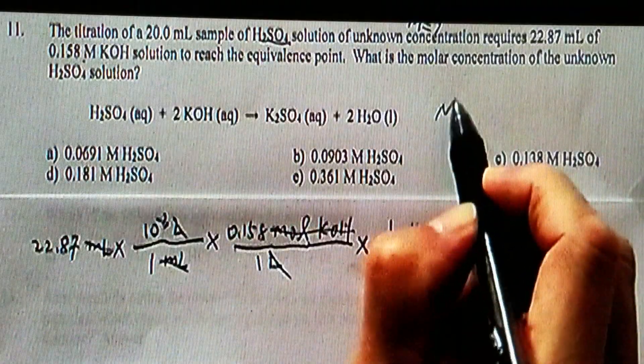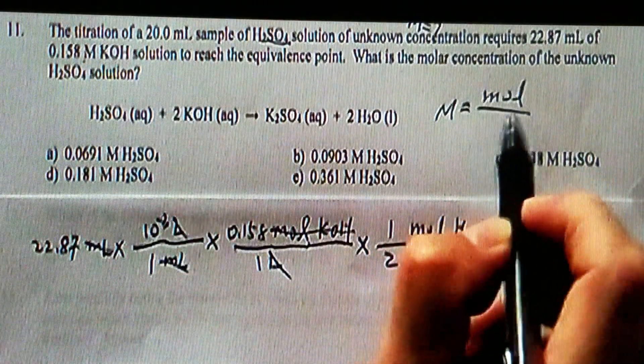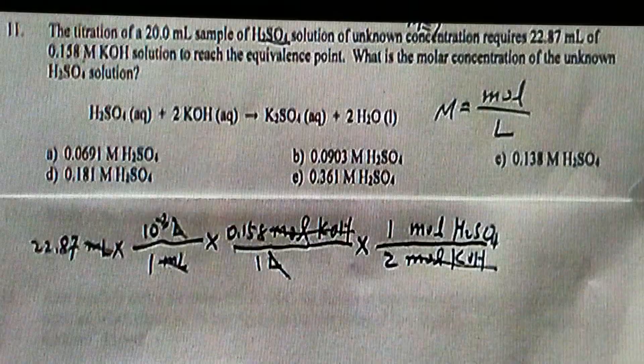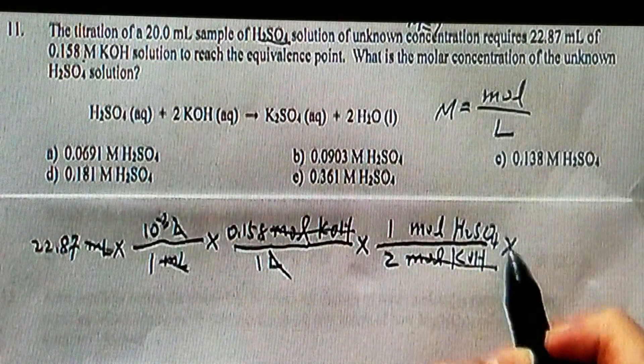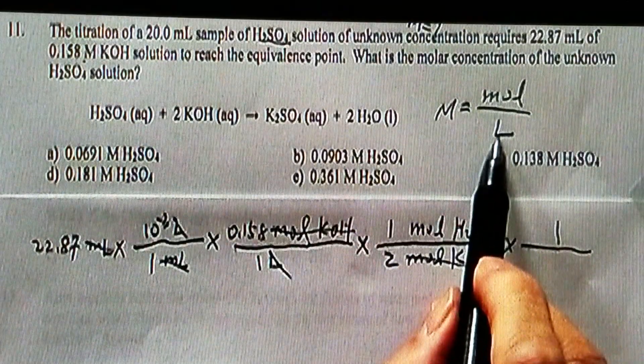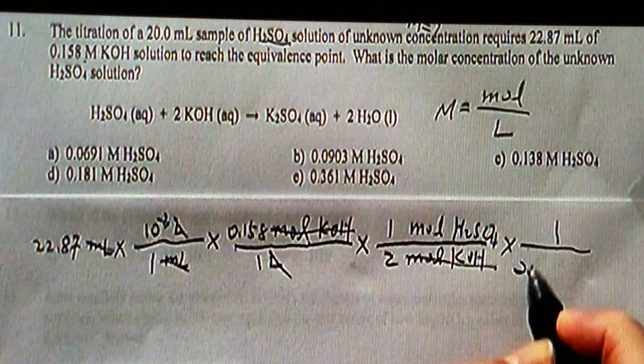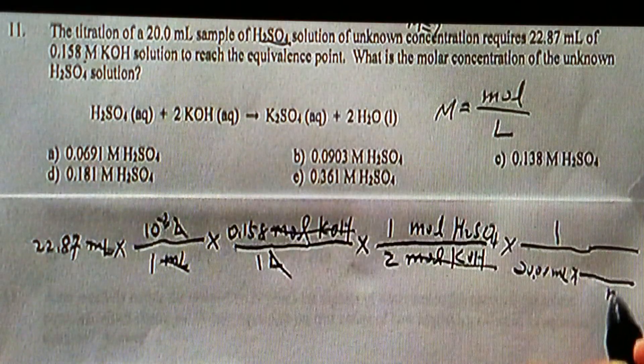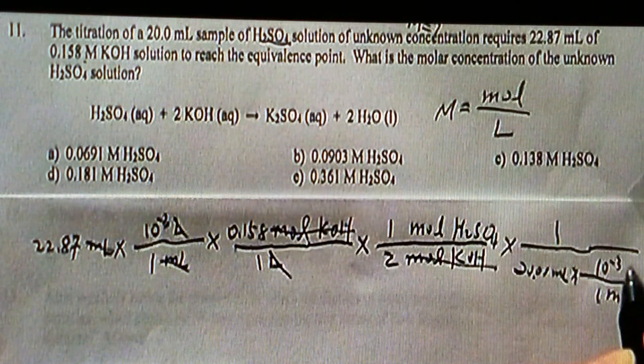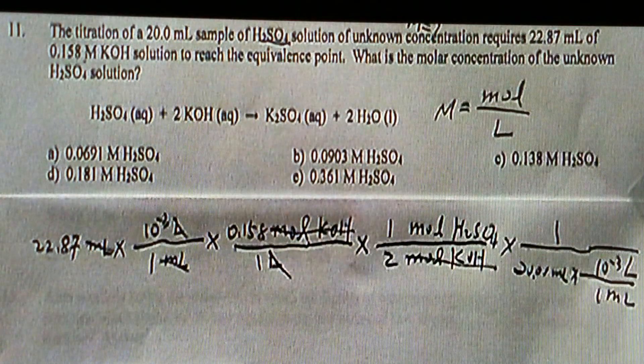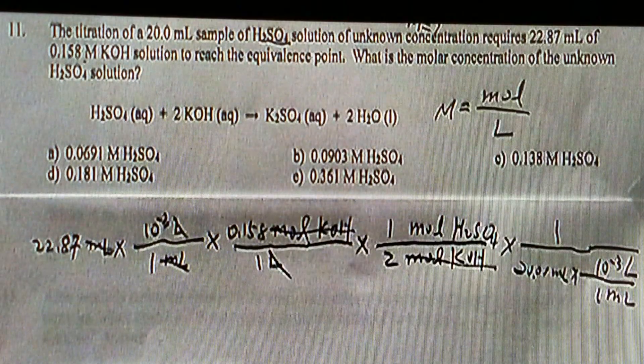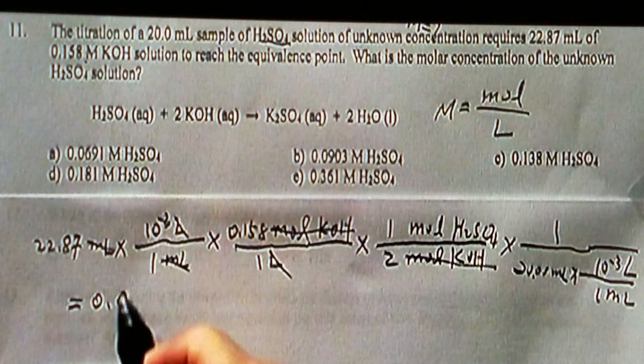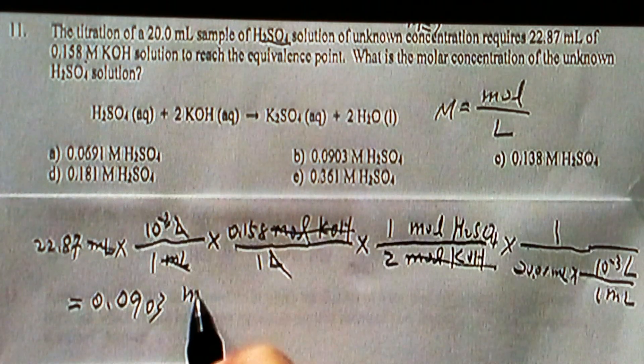Again, what is the molarity? Molarity is mole over volume in liter. So, and then we already have moles, which are simply divided by the volume in liter, and the volume is 20 milliliter, you have to change it up to liter. So, after you finish this entire calculation, that should give you 0.0903. If you look at it, if you look at the units,